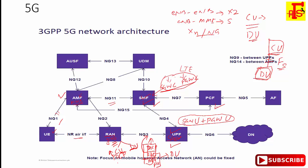The PCF — Policy Control Function — performs the same functions as the PCRF in 4G. Whatever functionality was done by the PCRF in LTE is now handled by the PCF in 5G. It provides policy rules for control plane functions, including network slicing, roaming, mobility management support, and the new 5G QoS policy and charging control functions.